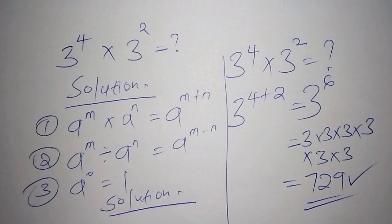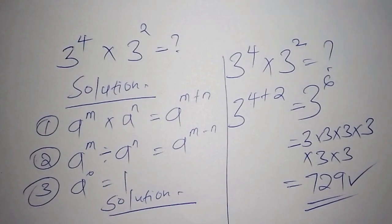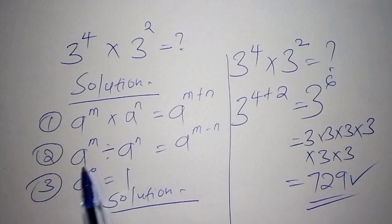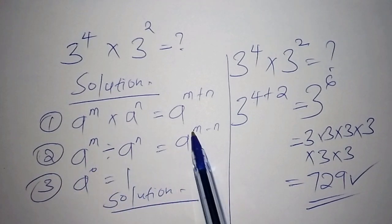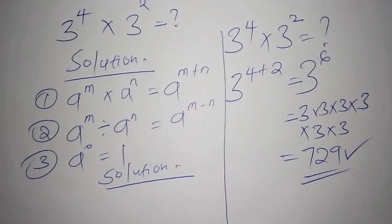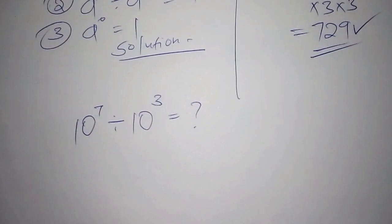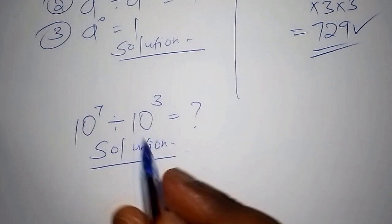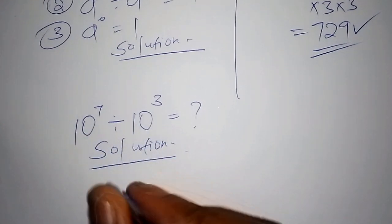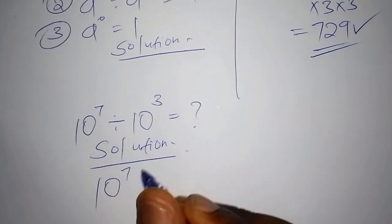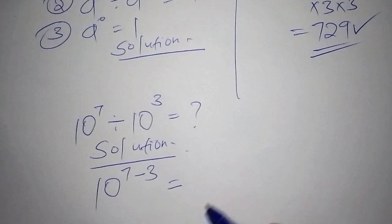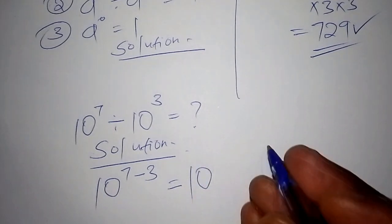Let's now work out the division example. Law 2 applies here: a to the power of m divided by a to the power of n equals a to the power of m minus n. Our problem is 10 to the power of 7 divided by 10 to the power of 3. The bases — the roots — are the same, so for division we subtract the powers: 7 minus 3 gives us 10 to the power of 4.